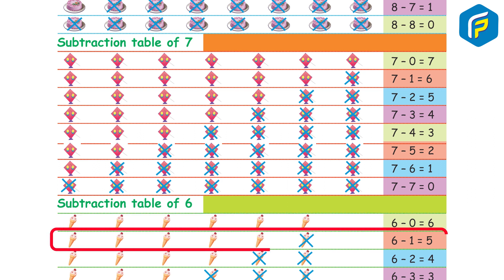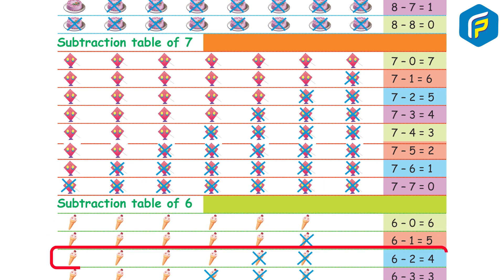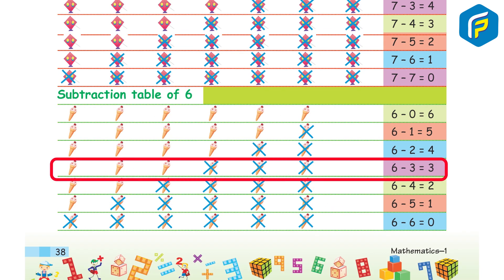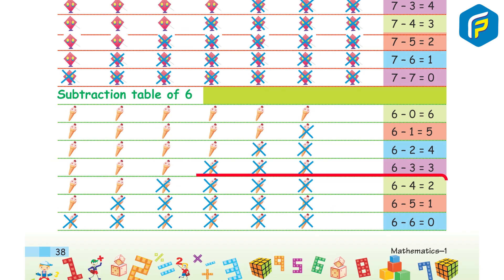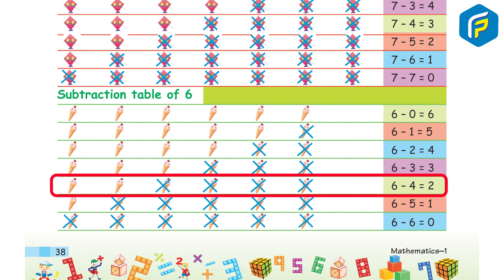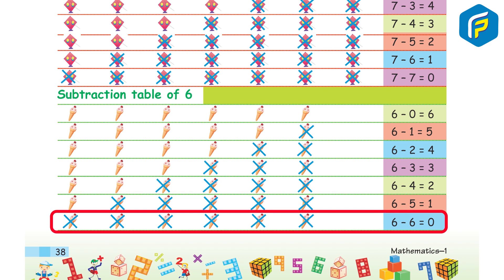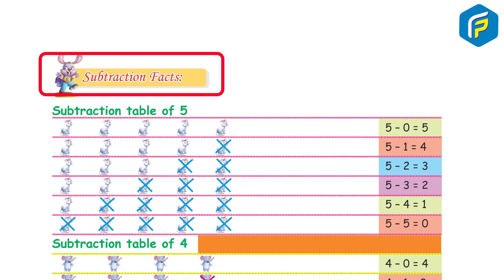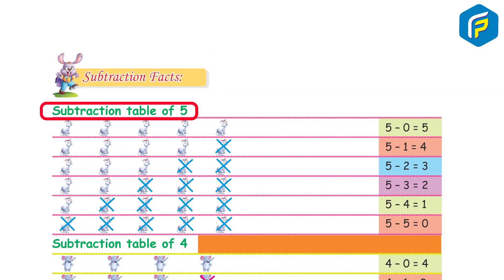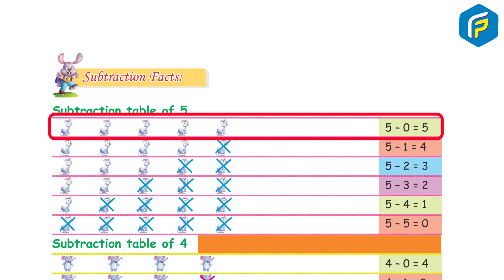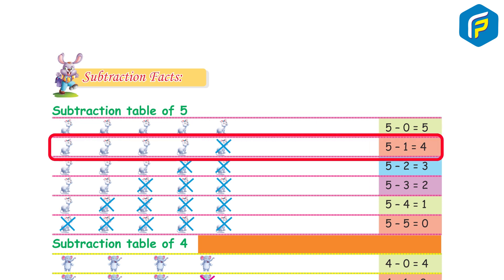Subtraction table of 6: 6 minus 0 is equal to 6. 6 minus 1 is equal to 5. 6 minus 2 is equal to 4. 6 minus 3 is equal to 3. 6 minus 4 is equal to 2. 6 minus 5 is equal to 1. 6 minus 6 is equal to 0. Subtraction facts.